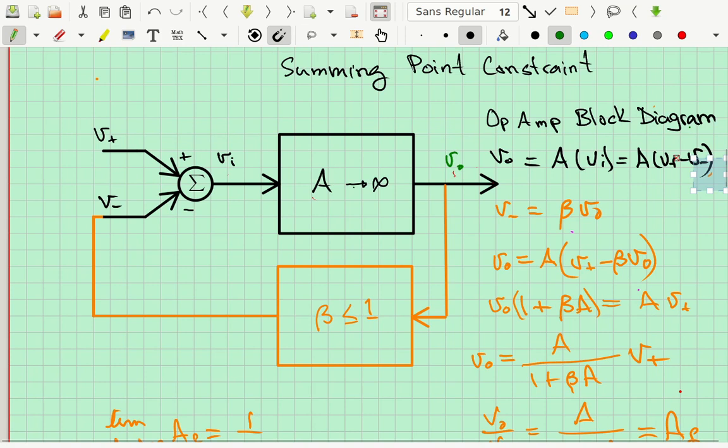We get Vout equals A times the quantity V plus. And then we're going to subtract out beta Vout because V minus was beta Vout. So that's really just A times V plus minus V minus again. But now we're getting it in terms of Vout. We got rid of V minus in our equation. And if you notice V plus is the input to this whole circuit right here, this whole block diagram. So really in this equation right here we have only the output and the input in this equation. And that means we could just use algebra to solve for the output in terms of the input.